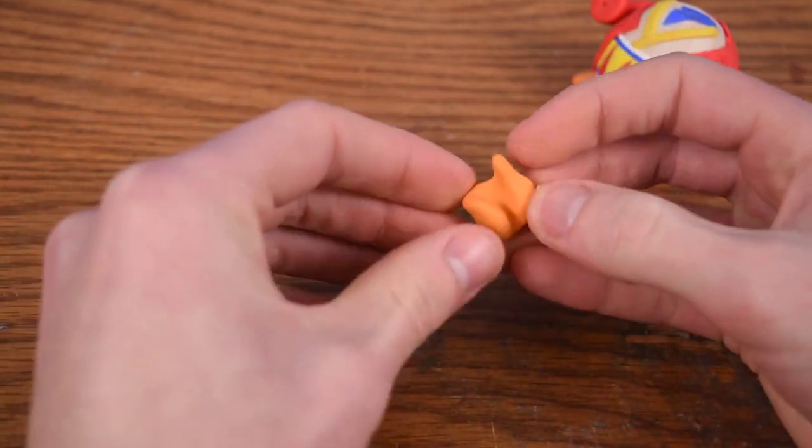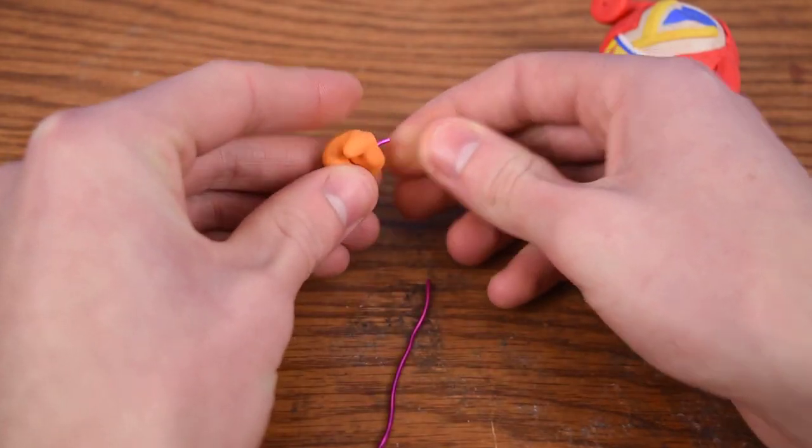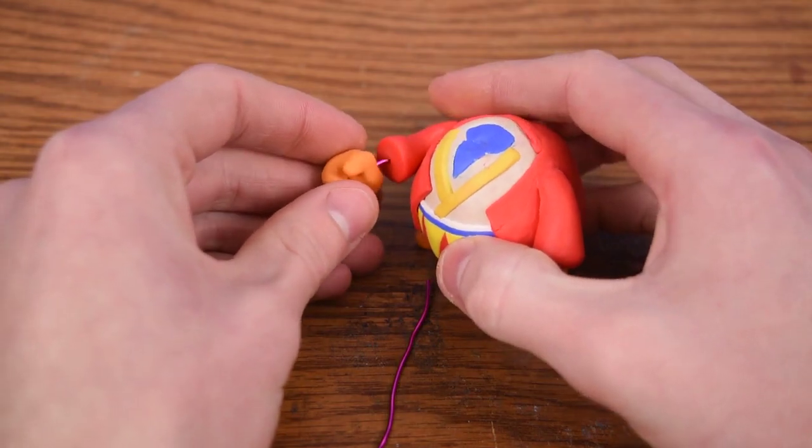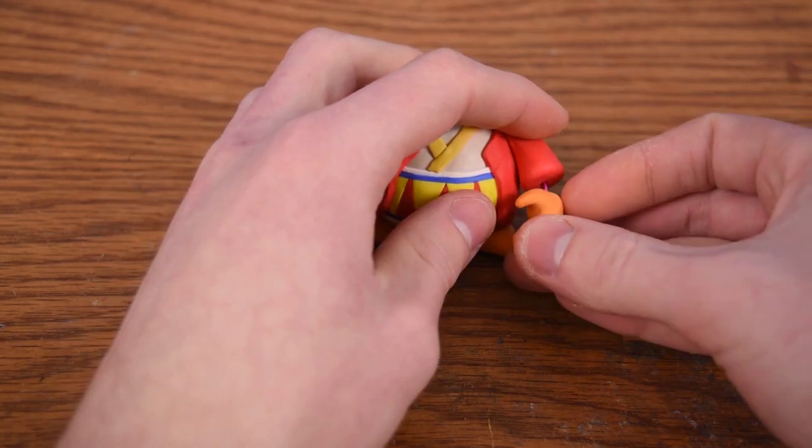If we use wires for anything, it would be to attach the hands onto the arms, just to sort of hold them in place better. I'm using some aluminum wire, but any kind of wire, even paper clips, works just fine.